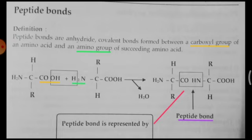Subsequently, the succeeding amino acids are also going to attach in the same manner. You can add the third, fourth, fifth, sixth amino acid and so on. They react in the same way to form a long chain of peptide, leading to oligopeptide and polypeptide. This is about the peptide bond formed between two amino acids.